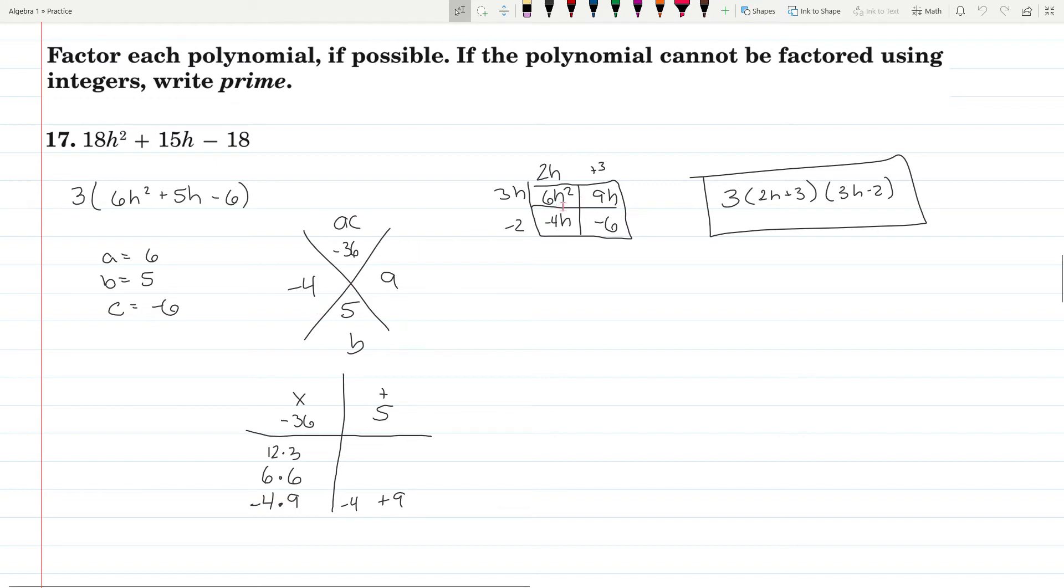So you have 6h squared and the negative 6. You have the negative 4h and the 9h. Pull your factors out: 2h, 3, 3h, negative 2. So you have your 3 that you factored out originally, and then 2h plus 3 and 3h minus 2.